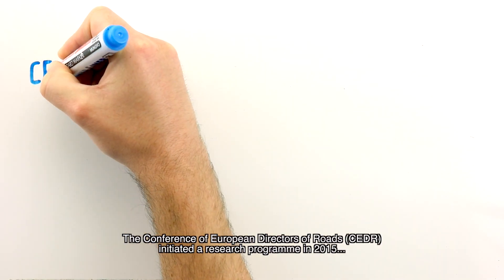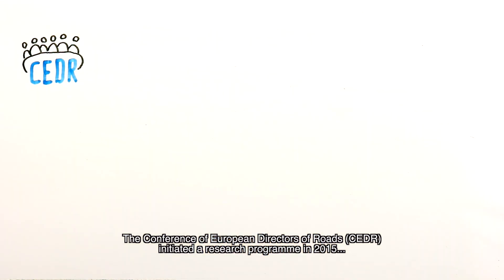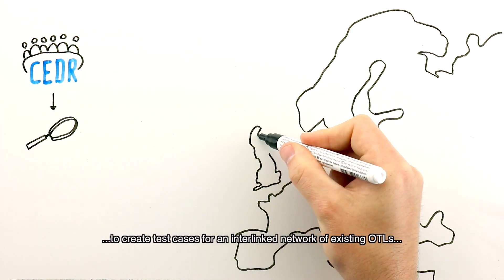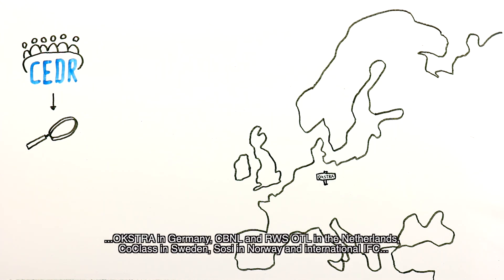The Conference of European Directors of Roads, CEDR, initiated a research program in 2015 to create test cases for an interlinked network of existing OTLs. Okstra in Germany, CBNL and RWS OTL in the Netherlands, COCLASS in Sweden, SOCI in Norway and International IFC.